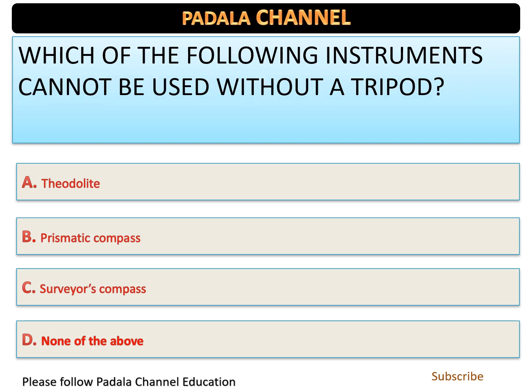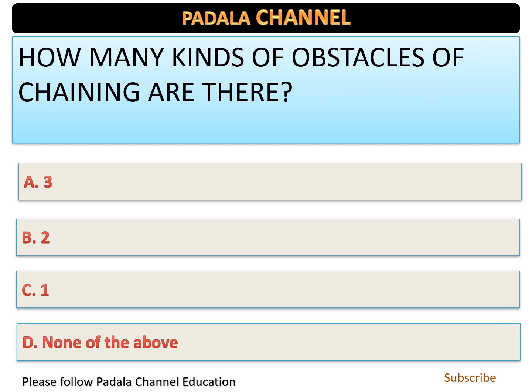Which of the following instruments cannot be used without a tripod? Options: A — theodolite, B — prismatic compass, C — surveyor's compass, D — none of the above. The correct answer is the surveyor's compass.